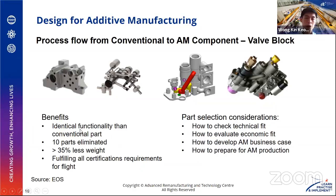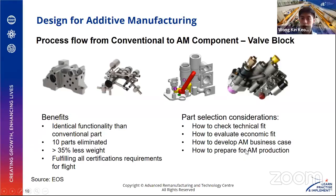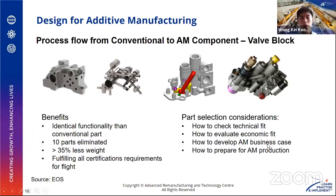Some key benefits include that you can definitely reduce a lot of part count and indirectly also reduce weight. After the part is done, you still need to go through qualification and certification, typically working with the user or an external validation body. Key considerations for part selection that will be covered in the course include how to check for technical fit, how to check for economic fit, and how to build a business case — because we need to tell stakeholders how this will eventually replace certain components and benefit the business in the long run, and how to put this process into a production mode.